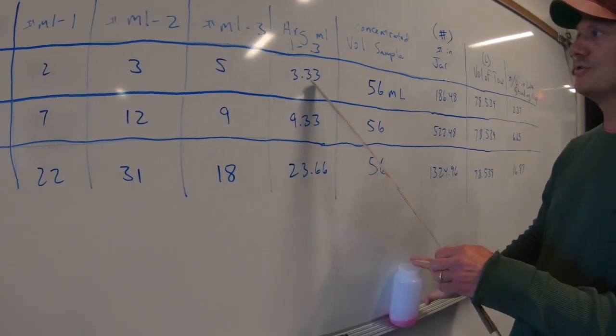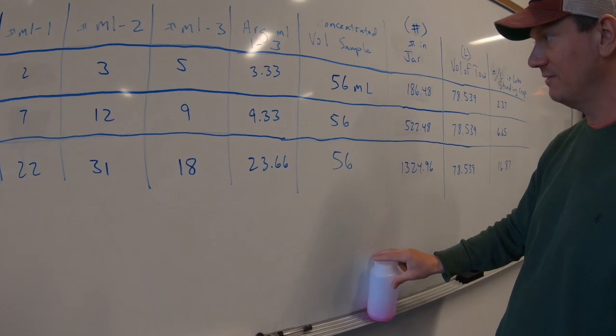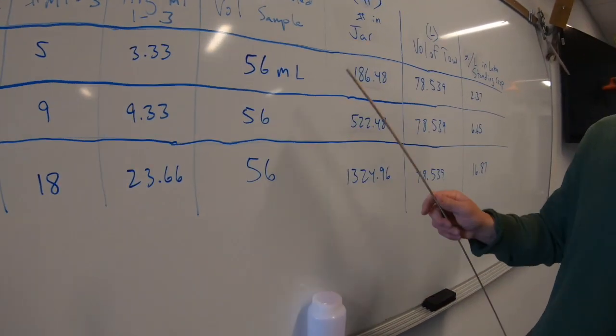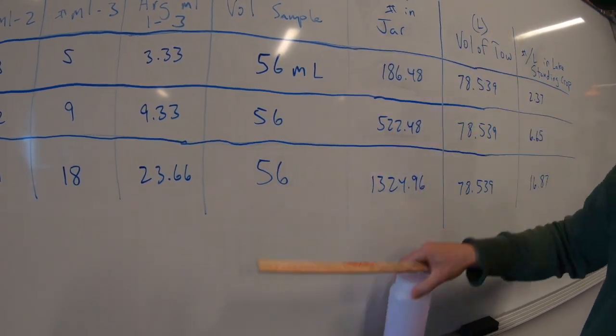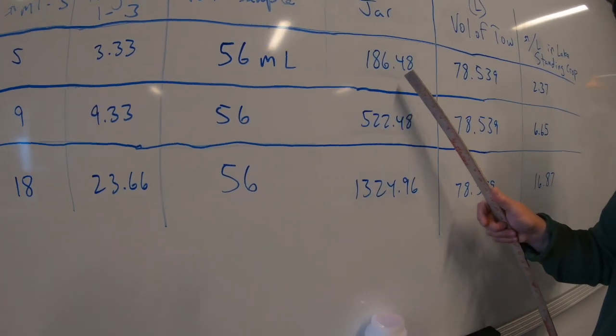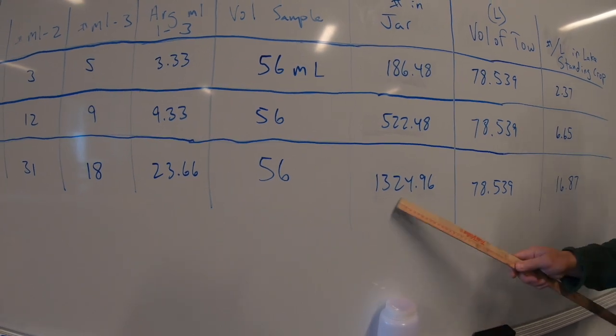So now we need to know the number in here. So we take the average and we multiply it by the volume. So the volume of this is 56. So then to find the number in the whole jar, this is the number per mill, multiply it by the volume of the jar. And you have the number of plankton in the jar. So 186, 522, 1324.